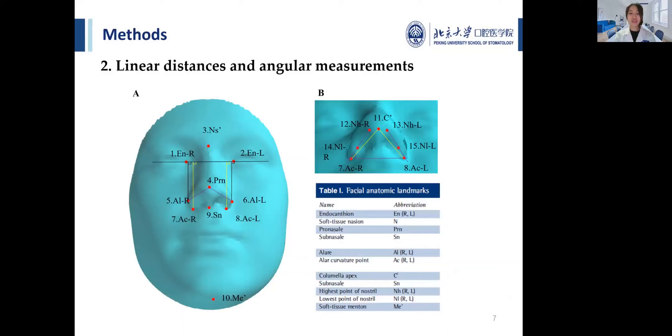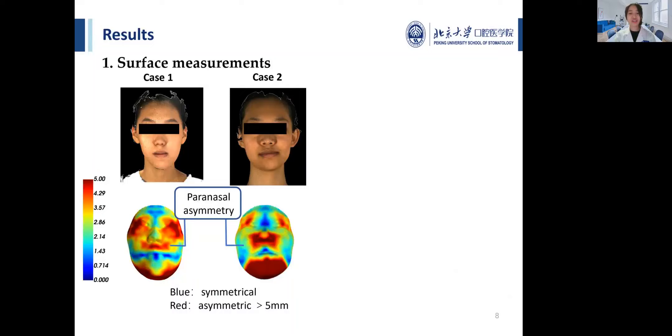Then, we perform linear distance and angular measurement. We automatically indicate 15 commonly used nasal landmarks to calculate the asymmetry of the nasal bridge, nasal alar, and nasal nostrils. Our results intuitively show that the location and degree of asymmetry varied from patient to patient.